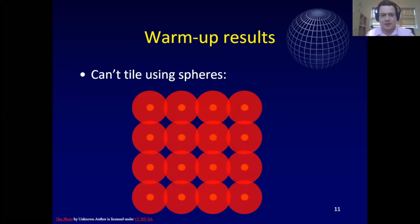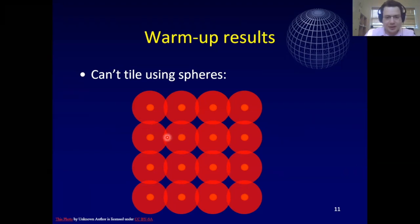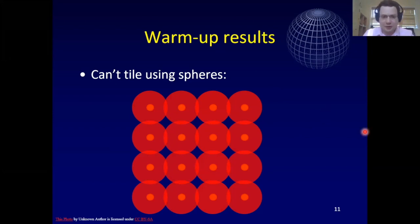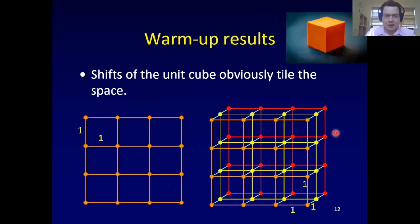Of course, that lower bound doesn't work directly — you cannot tile the plane with discs because some areas will be covered twice and some not at all. More generally, in higher dimensions this gets worse: there will be points covered by many balls and points not covered at all.